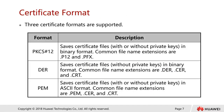Next we talk about the certificate format. Basically there are three types of formats supported in our system, and each format can be associated with a file extension. The first format is called PKCS#12. You can save this certificate as a file with or without the private keys in a binary format. The common file extensions are .p12 and .pfx.